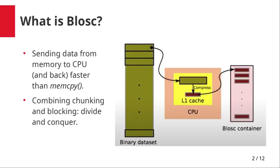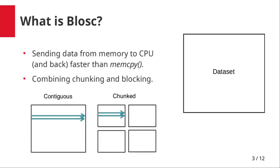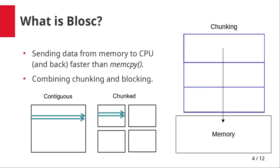A drawback of using the cache for compression or decompression is that it is very limited in size. This is surmounted by combining chunking and blocking. Blosc2 supports full 64-bit datasets structured on a double partitioning schema, which means dividing the datasets into chunks that fit in the last level of the CPU cache, and then subdividing these chunks into blocks that are small enough to fit in the first-level caches of modern processors.